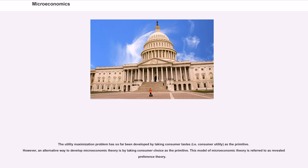The utility maximization problem has so far been developed by taking consumer tastes, i.e. consumer utility, as the primitive. However, an alternative way to develop microeconomic theory is by taking consumer choice as the primitive. This model of microeconomic theory is referred to as revealed preference theory.